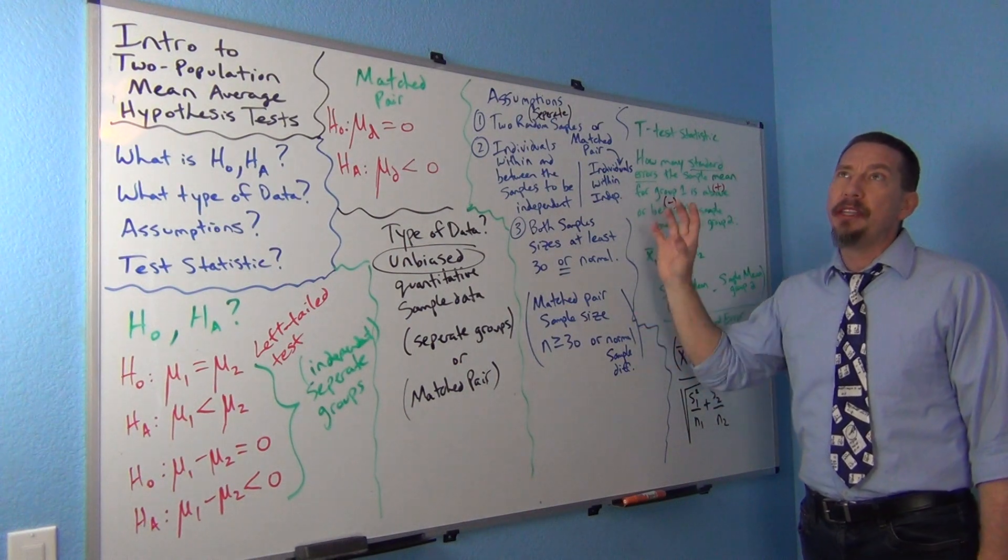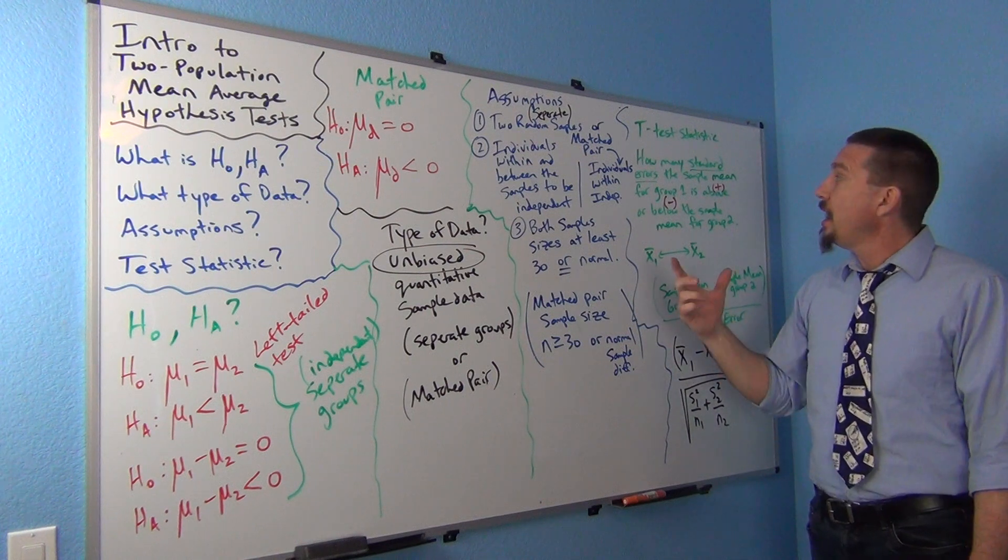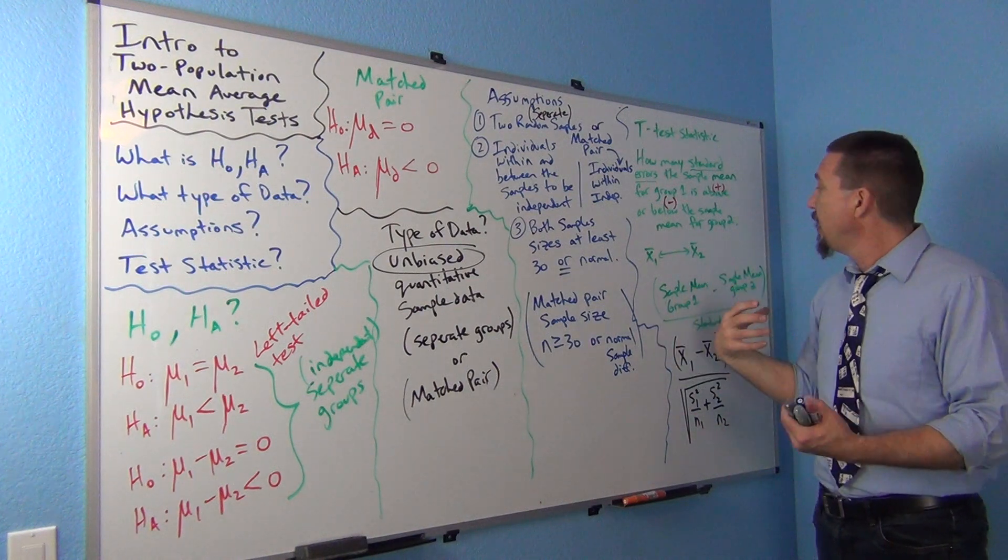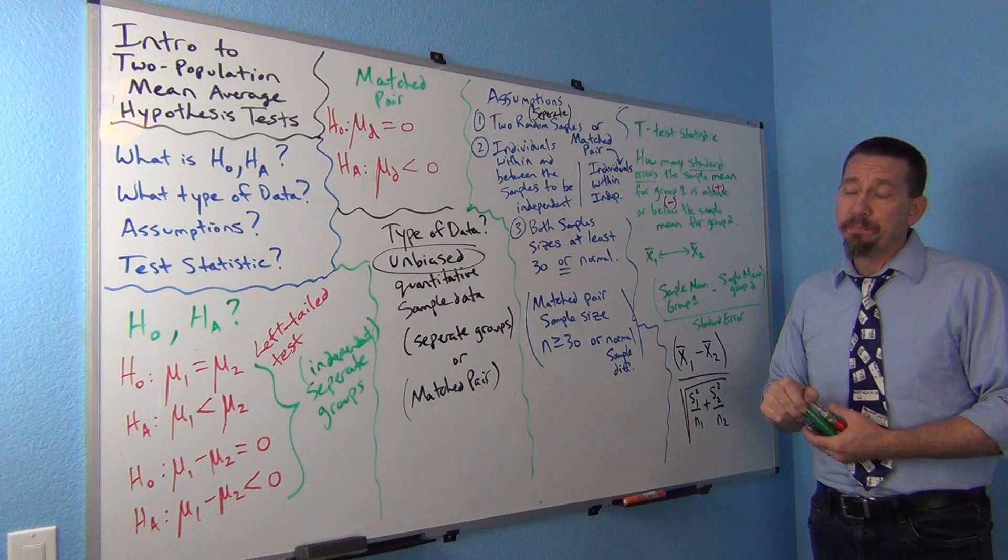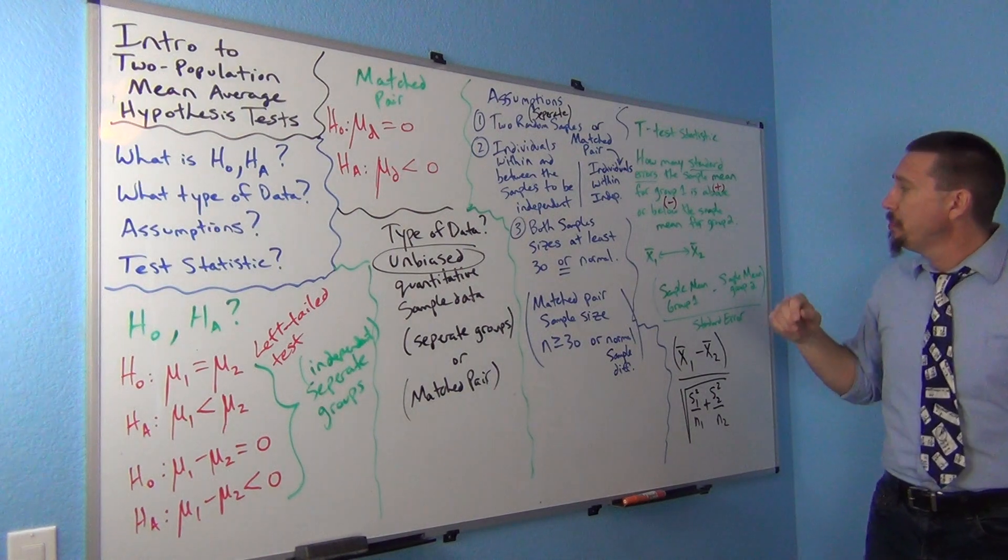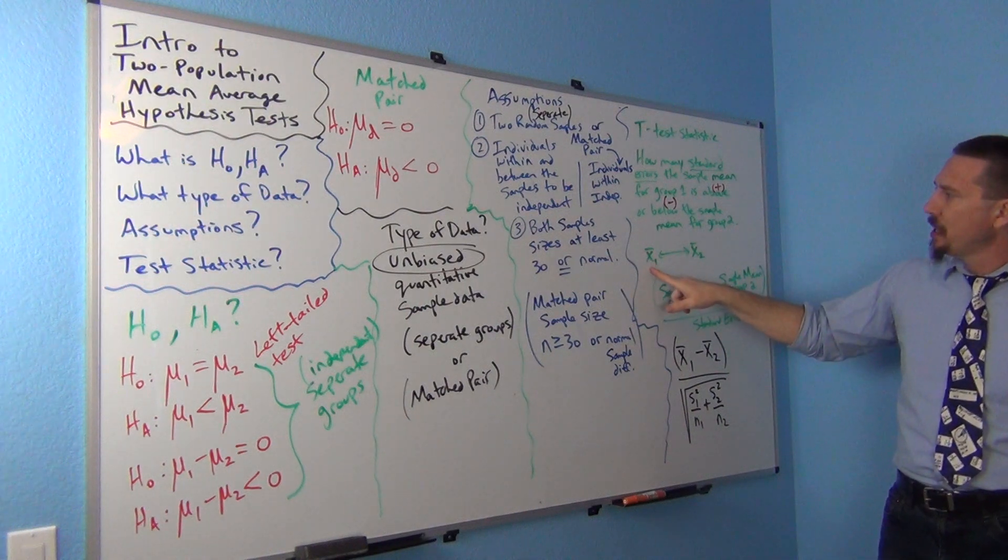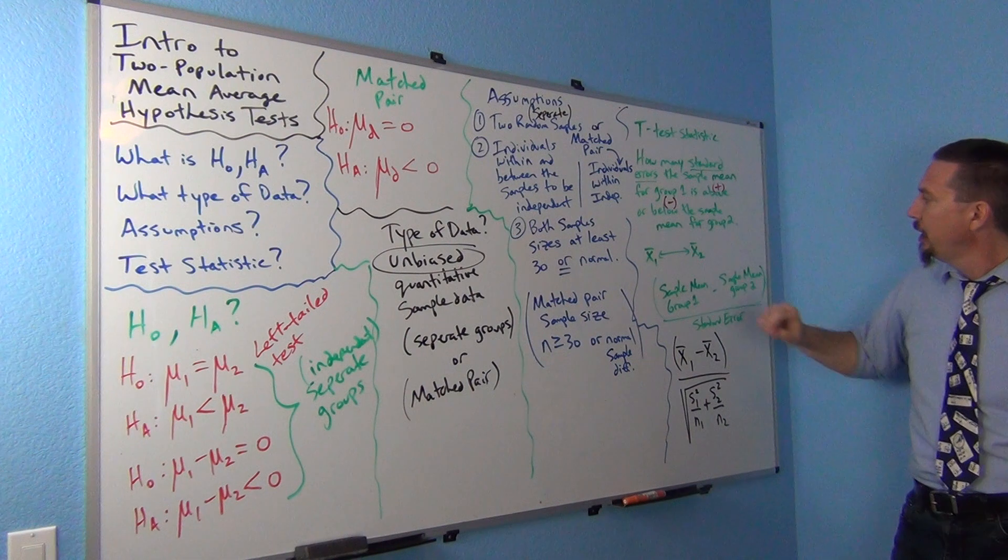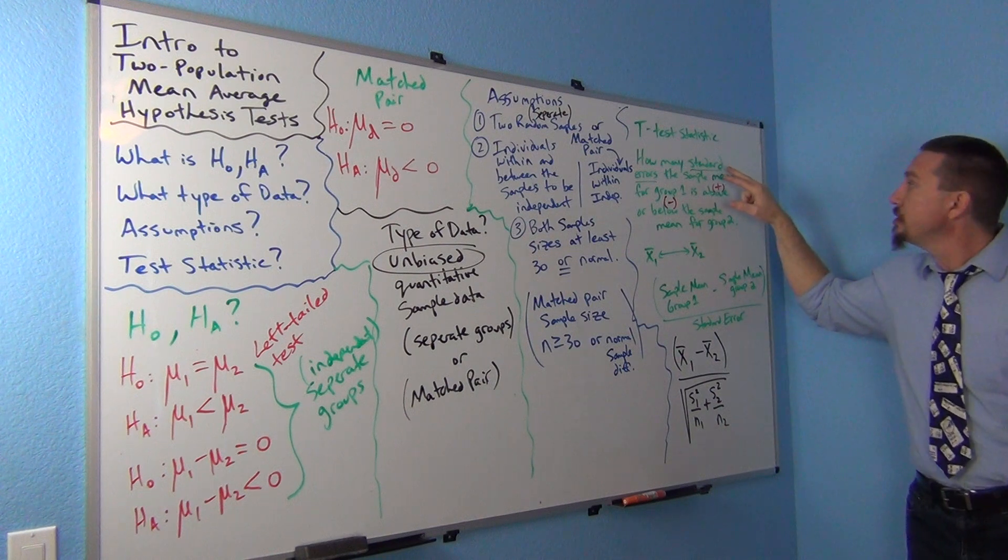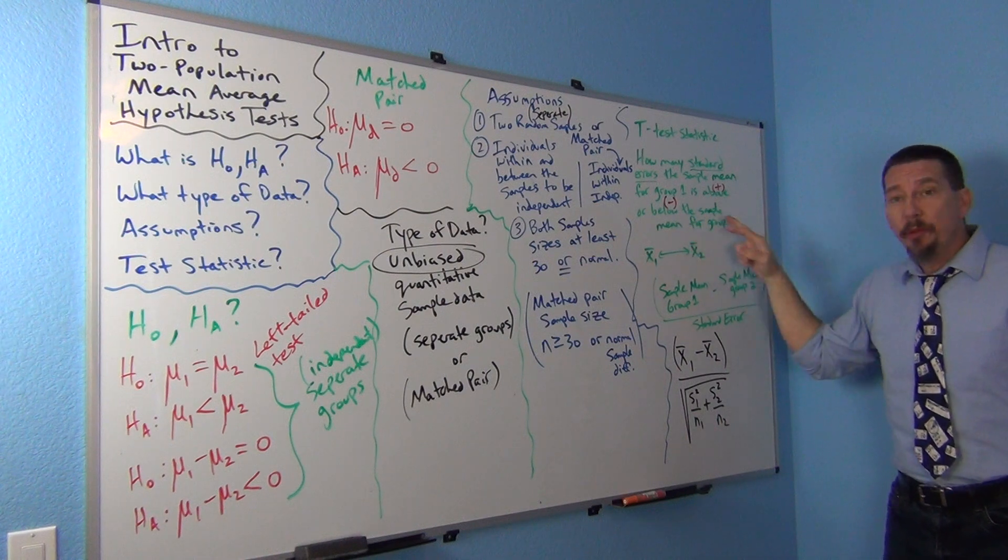It's just now, instead of comparing the sample mean to the population mean in the null hypothesis, we're actually going to compare the two sample means. In this case, we're going to count how many standard errors the sample mean for group one is above or below the sample mean for group two.